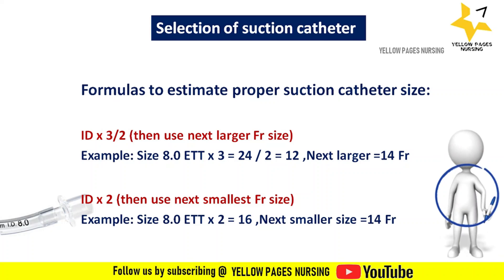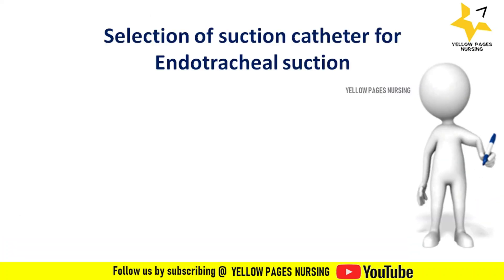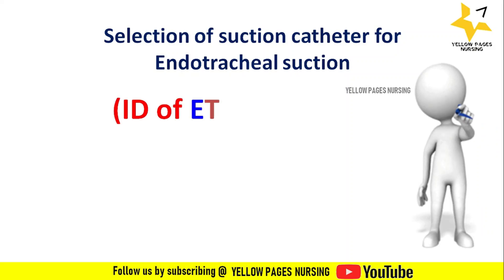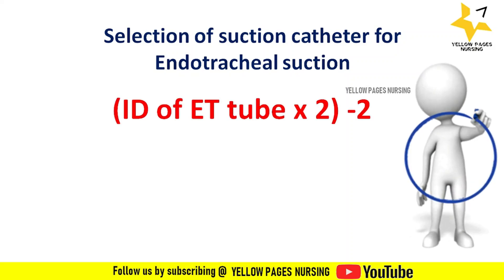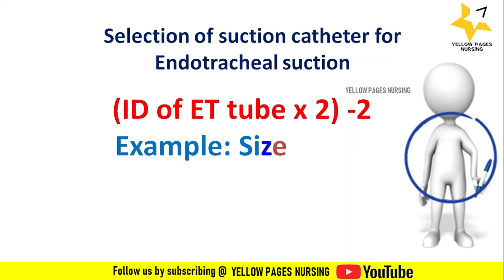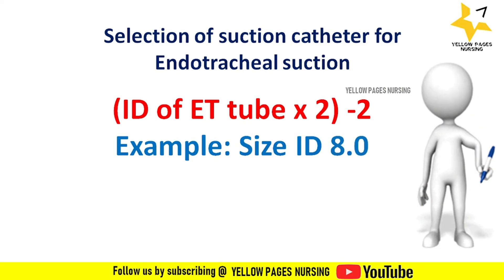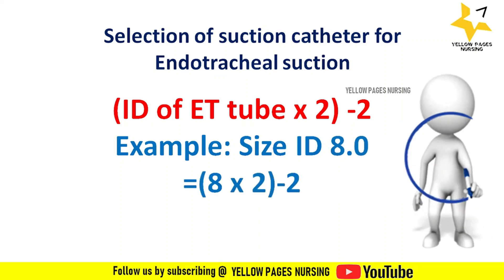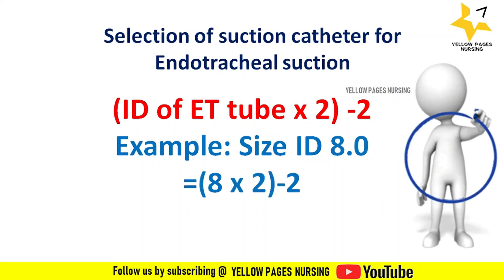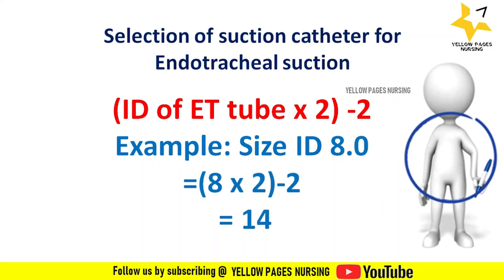Another simple formula is: internal diameter × 2 − 2. For example, if the internal diameter is 8: (8 × 2) − 2 = 14. So the suction catheter size is 14 French.